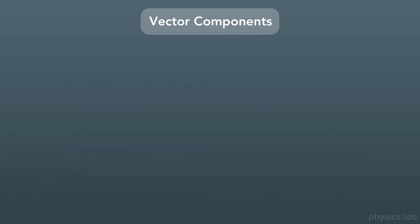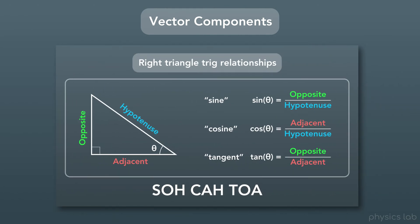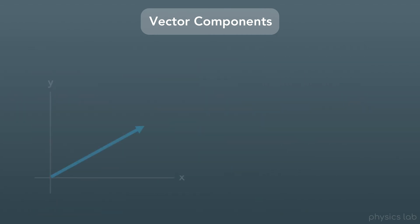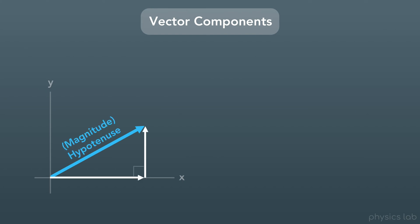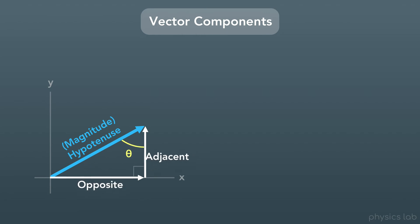So now that we know what the components are, how do we actually calculate them? This is where we'll need to know the right triangle trig relationships. Every vector and its two components form a right triangle, where the magnitude of the vector is the length of the hypotenuse. In order to find the lengths of the other two sides, which are the components, we need to be given an angle. If this was the angle, then we would label the adjacent and opposite sides like this. And if we were given the other angle, the opposite and adjacent sides would just be flipped.